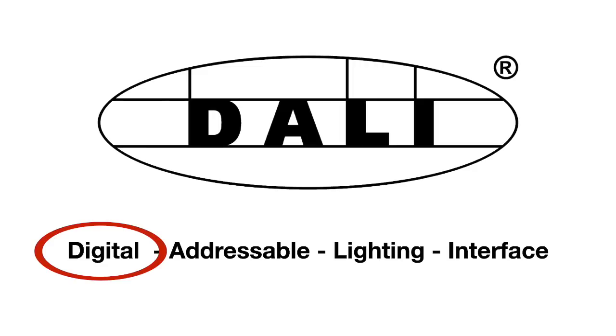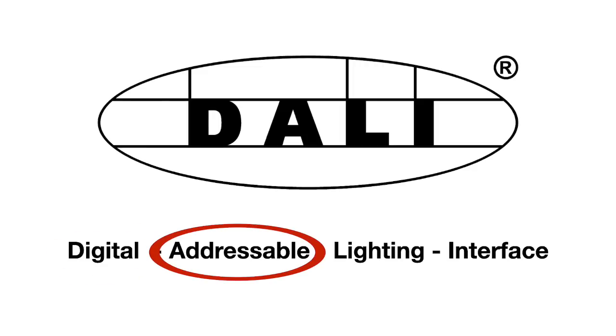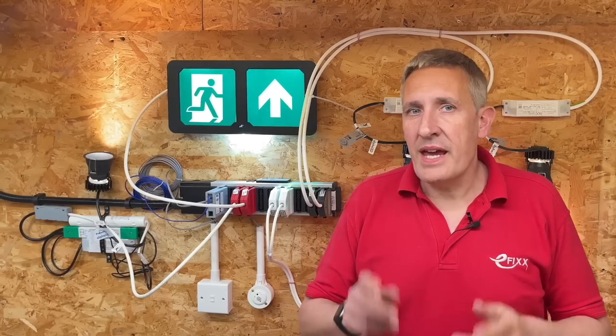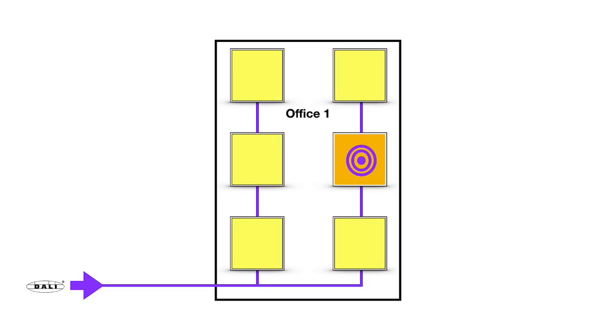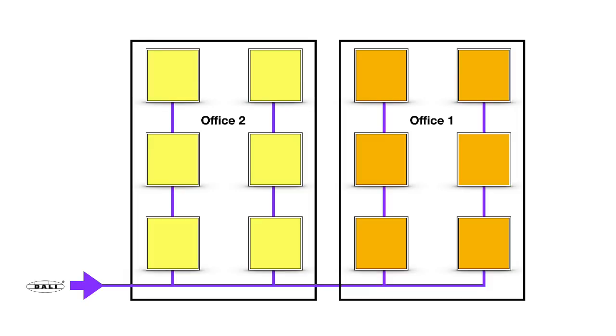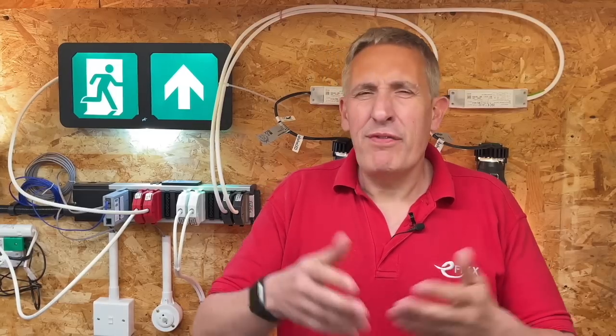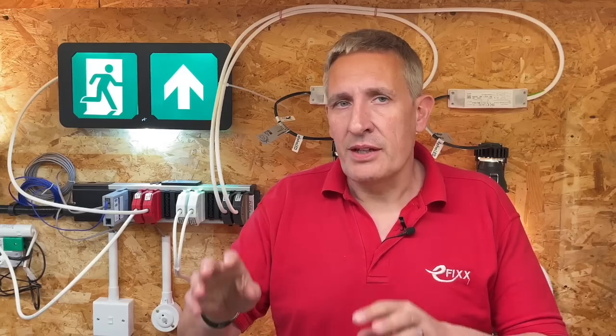Now let's explore the digital and addressable elements — the D and the A of the DALI protocol. The DALI signal can be configured to talk to an individual light fixture, groups of fixtures, or all of the fixtures connected to the bus. Think of that as a floor of a building: you could talk to one fixture, or perhaps a whole room's worth of fixtures, or all of the fixtures on that particular floor.